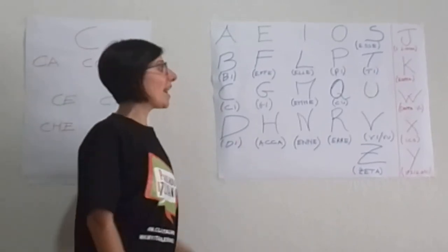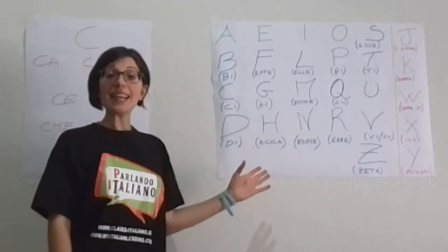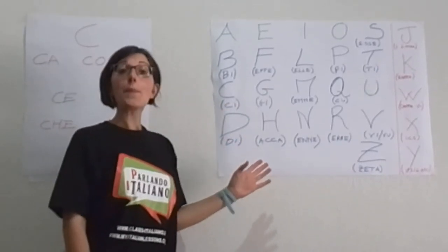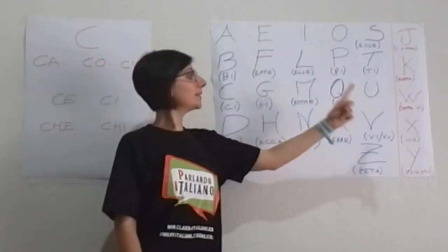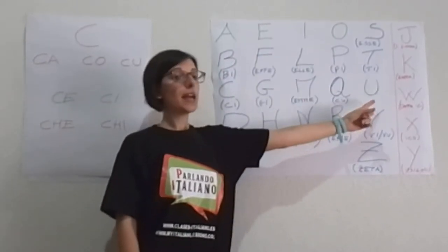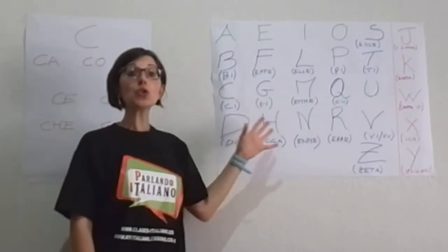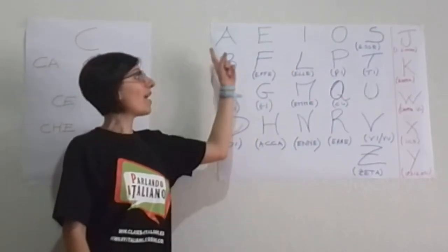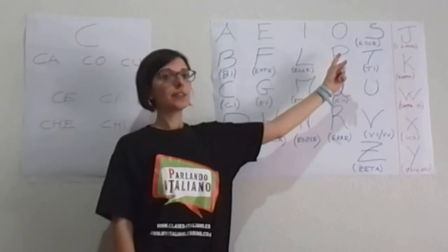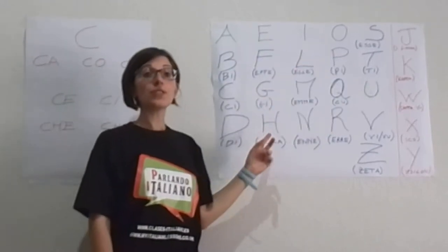Iniziamo! L'alfabeto italiano è composto da vocali e consonanti. So, vowels and consonants. Let's see how to pronounce all these letters.